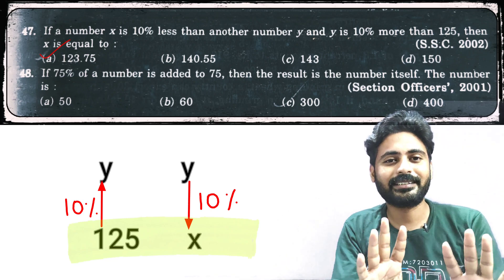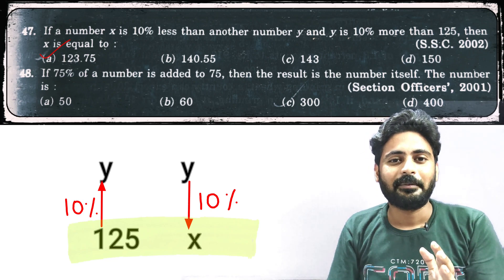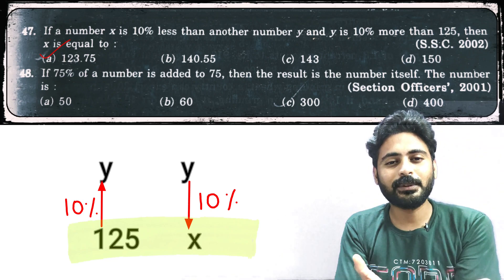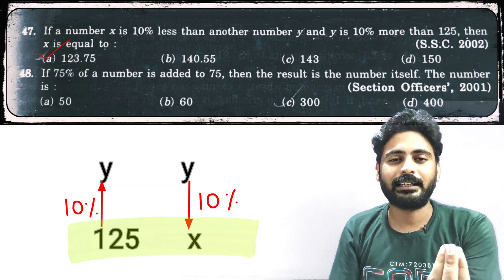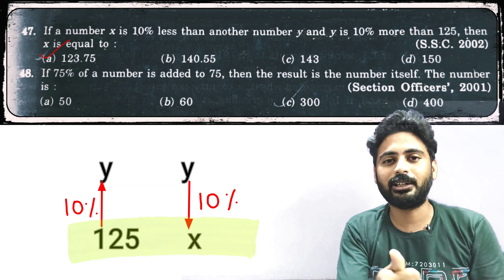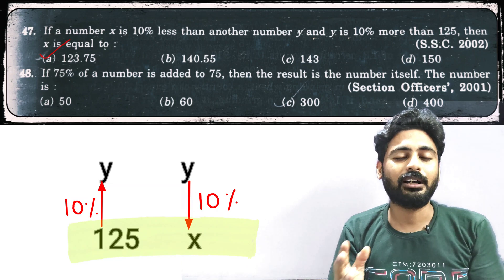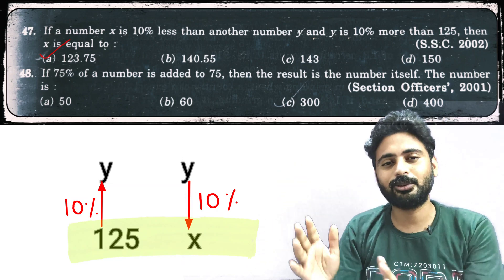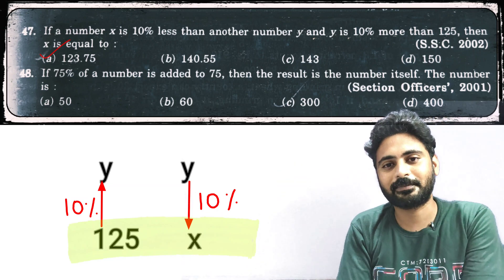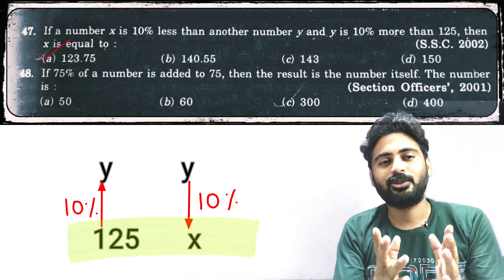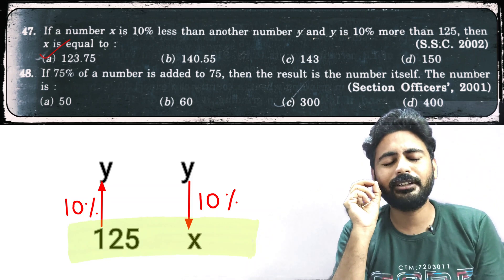If you didn't understand, please let me know. But you understood, right? It would be somewhere close to 125, and the closest number we have in the options is 123. Other numbers are 140, 143, 150 - higher numbers. So we will directly reject these. I hope you understood and we solved it within a few seconds.